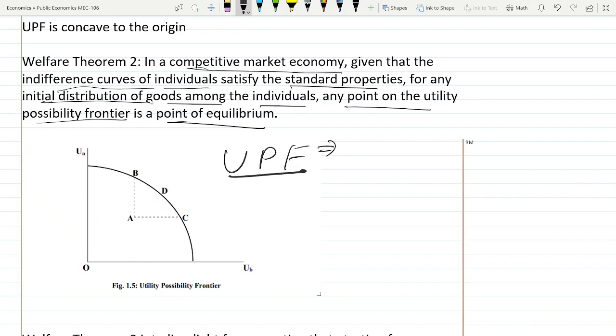The shape of this curve is concave. There is a trade-off between utility A and utility of B. If we increase the utility of A, we have to reduce the utility of B. Suppose the initial endowment is at point A. Based on social judgments, we can move that point on this curve either to B, D, or C. If the social judgment is like UA should be equal to UB, both we are giving equal weightage.